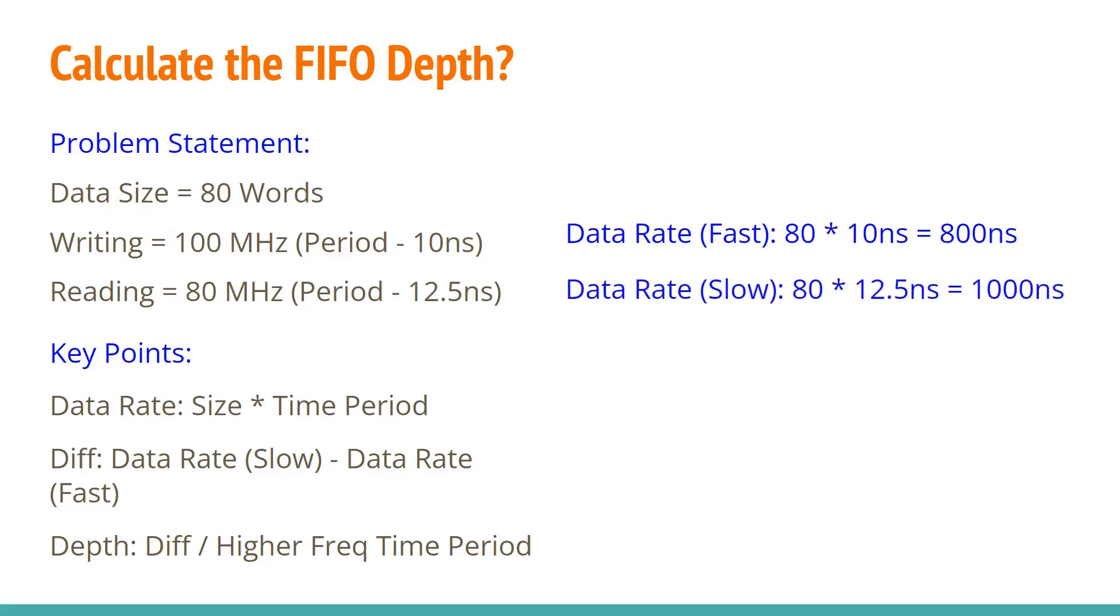So let's look at the slow data rate. So the receiver is operating at a slower 80 megahertz clock. And the period for that clock is 12.5 nanoseconds, as we discussed. So it's going to take 80 multiplied by 12.5 nanoseconds, which is a thousand nanoseconds to receive those 80 words, provided it's reading continuously and the data is available throughout these 80 words.